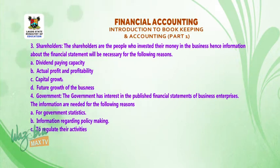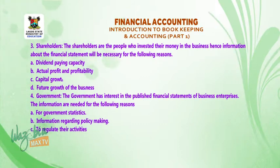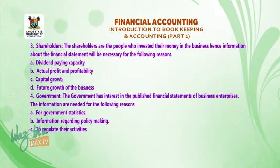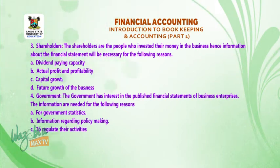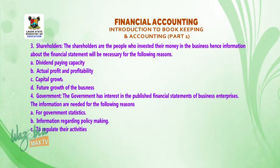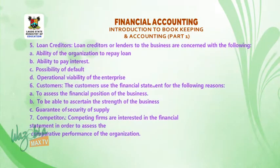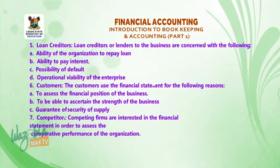Four, government — the government has interest in the published financial statements of business enterprises. The information is needed for government statistics, information regarding policy making, and to regulate their activities. Five, loan creditors — lenders to the business are concerned with the ability of the organization to repay loans.